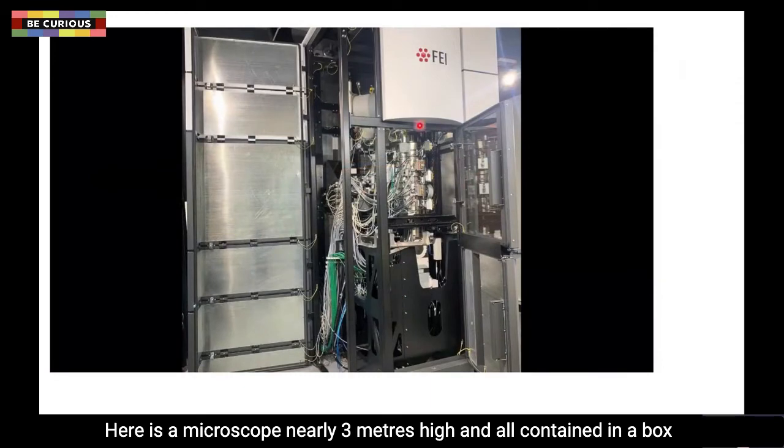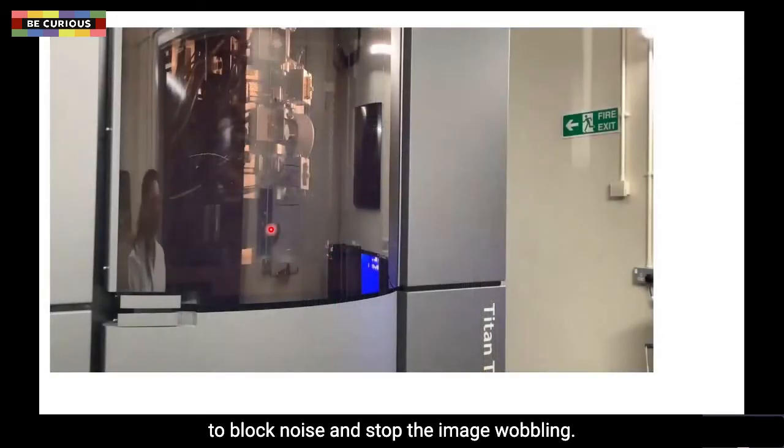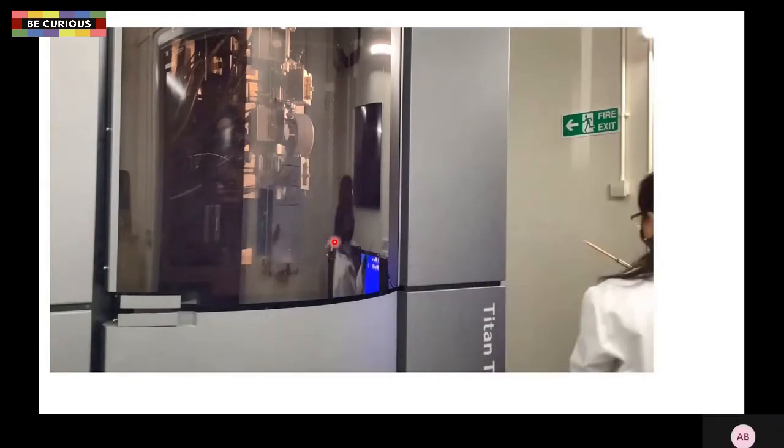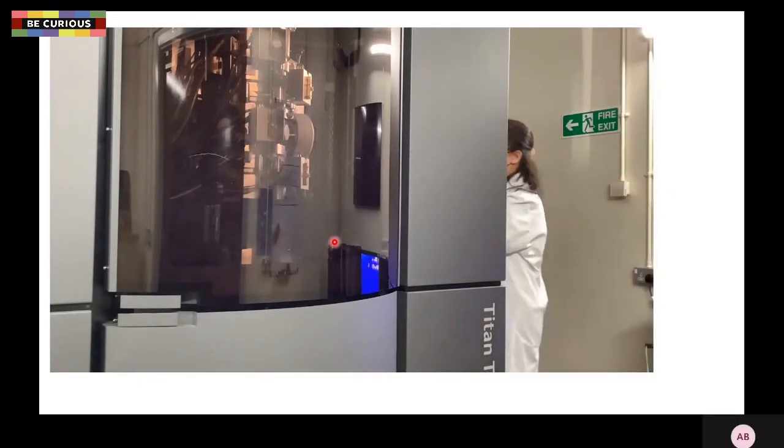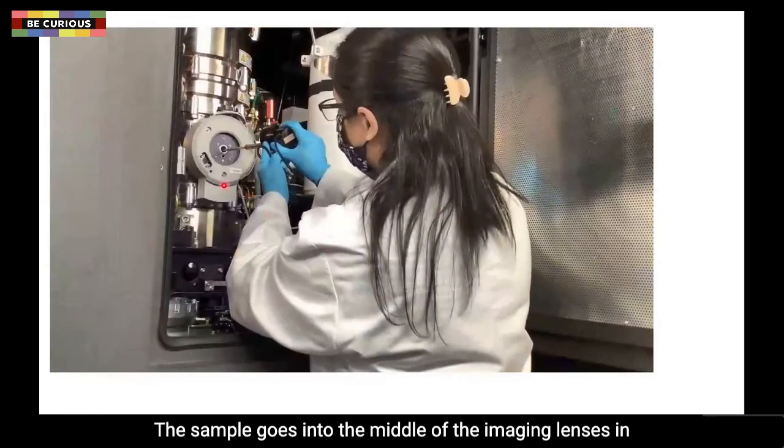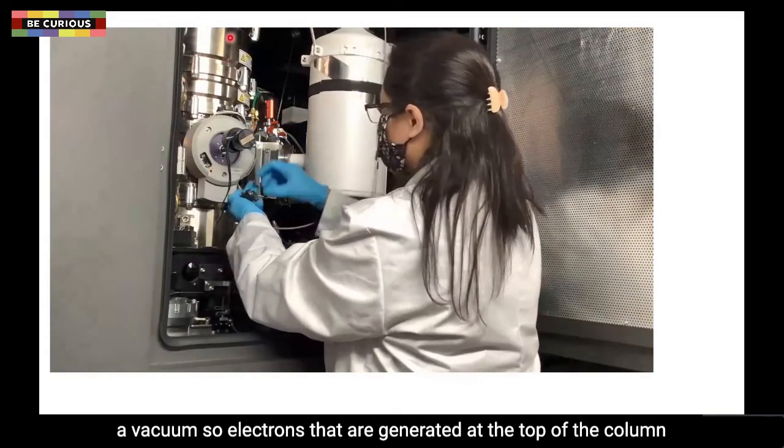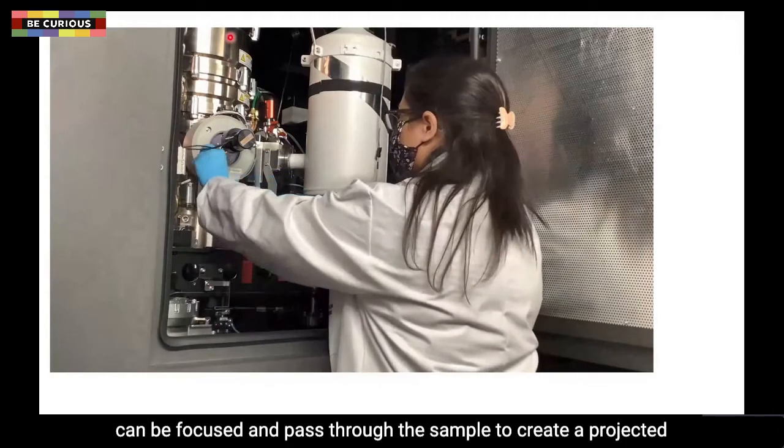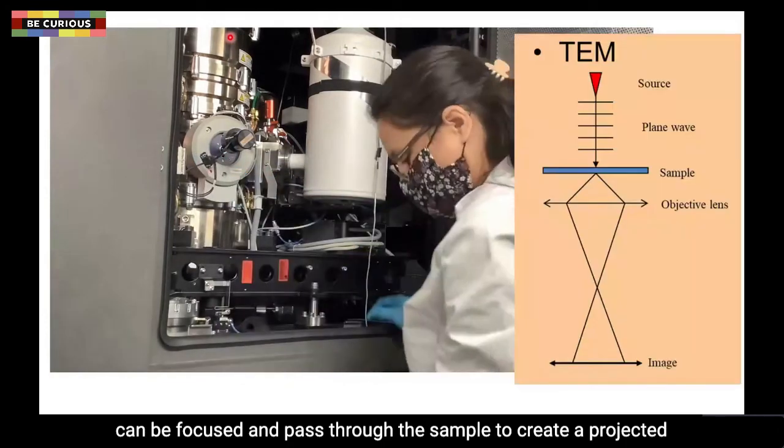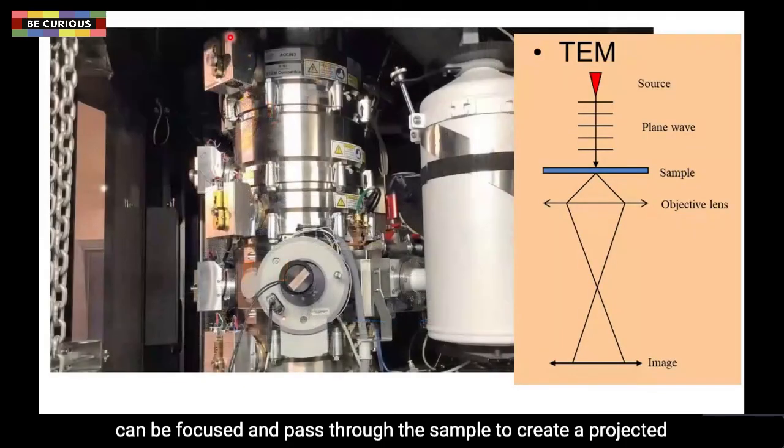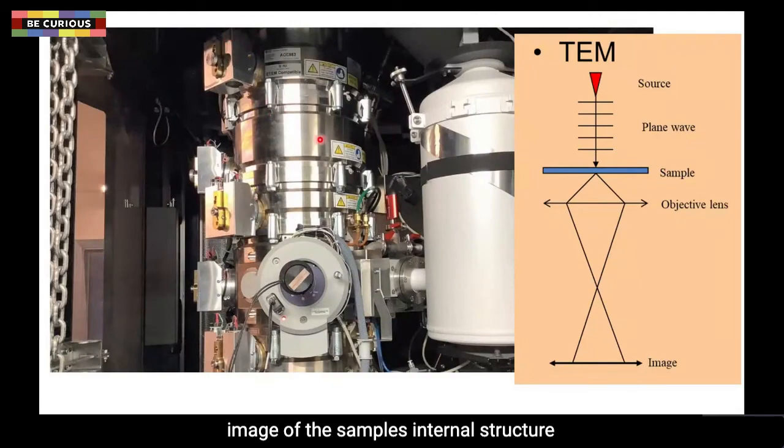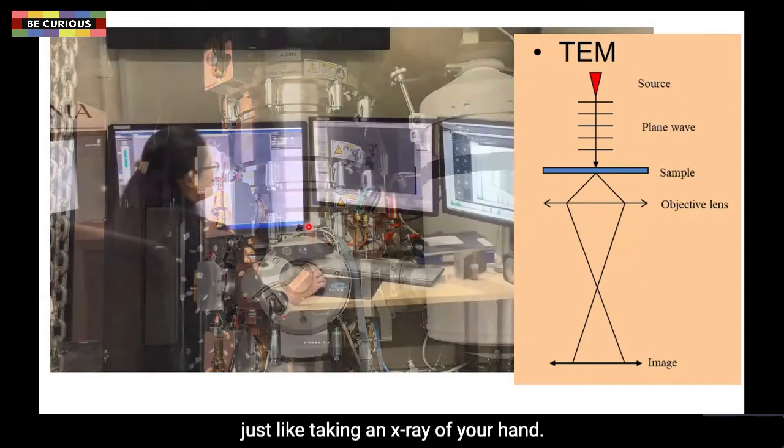Here is the microscope, nearly three metres high and all contained in a box to block noise and stop the image wobbling. The sample goes into the middle of the imaging lenses in a vacuum so electrons that are generated at the top of the column can be focused and pass through the sample to create a projected image of the sample's internal structure, just like taking an x-ray of your hand.